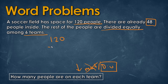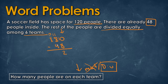To subtract 120 minus 48, we start from the right and borrow from the two, changing it to one and giving 10 in the tens place. Ten minus eight equals two. Then one minus four requires borrowing from the hundreds: 11 minus four equals seven. So we have 72 people total, divided equally among six teams: 72 divided by six equals 12 people per team.